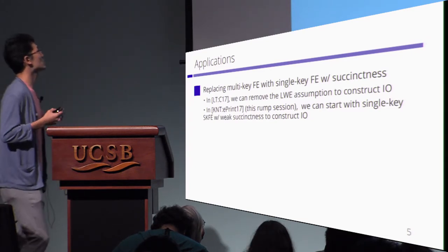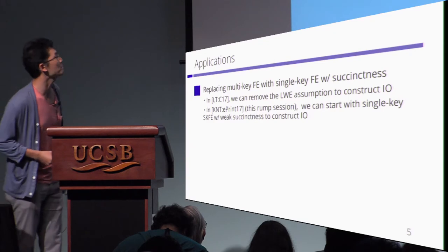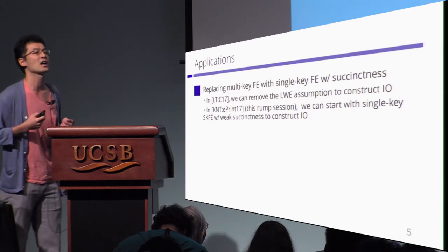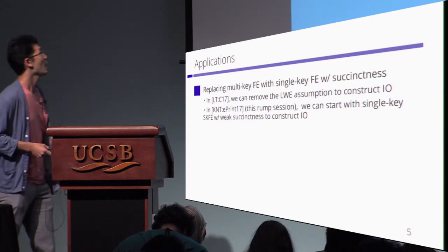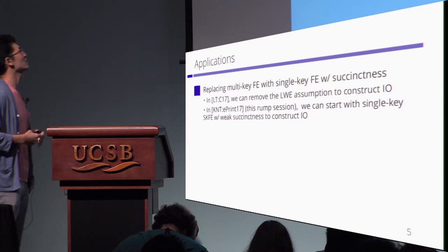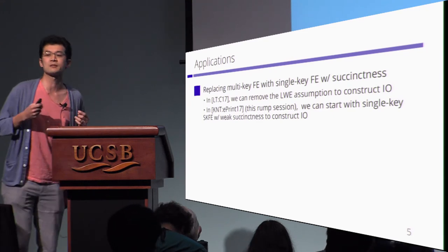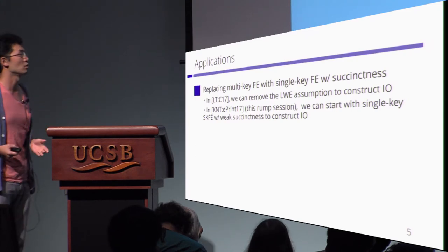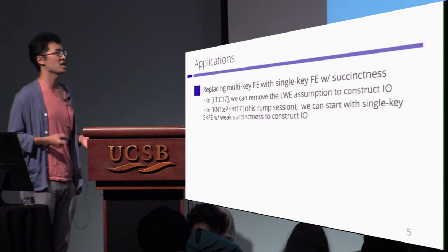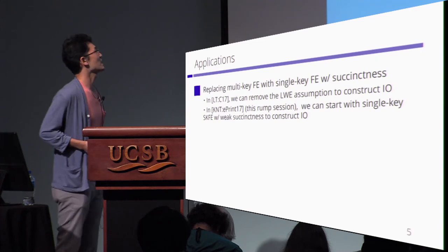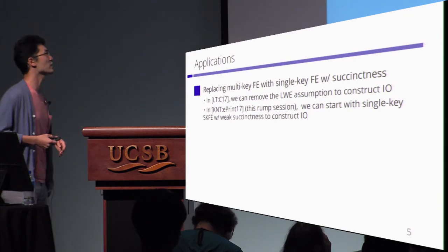For example, in this crypto, Lin and Tesoro proposed the indistinguishability obfuscation from a 3-linear map, block-wise local PLG, and LW assumption. In this work, we can remove the LW assumption to construct IEO. And in the last talk, I told our result how to construct the indistinguishability obfuscation only from secret key functional inclination. But I said that it should be collusion resistant — collusion resistant means multi key. But we can replace the multi key SKFE in this construction with single key secret key functional inclination with weak succinctness.